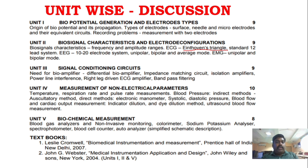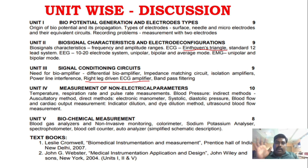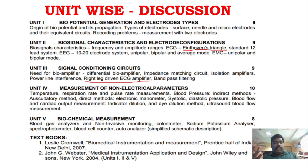In Unit 3, you have to understand signal conditioning circuits and different types of amplifiers. Then in Unit 4, you have to understand blood pressure as well as cardiac output measurements. You need to do a lot of practice cards on these topics and repeat the questions.